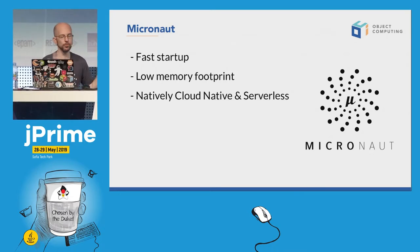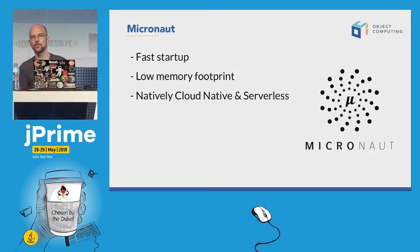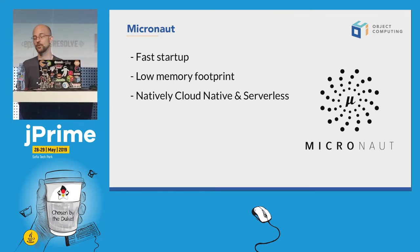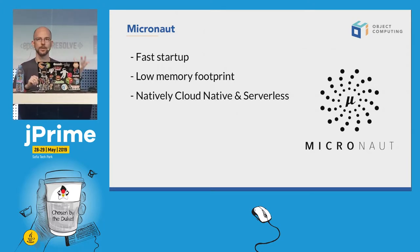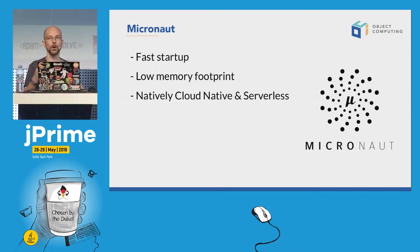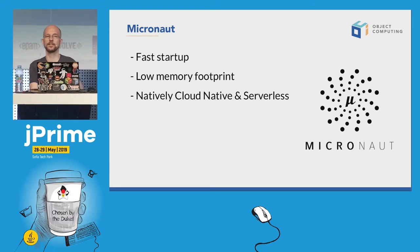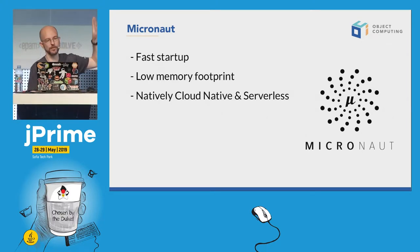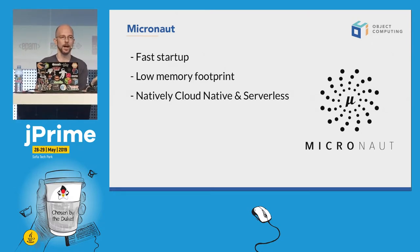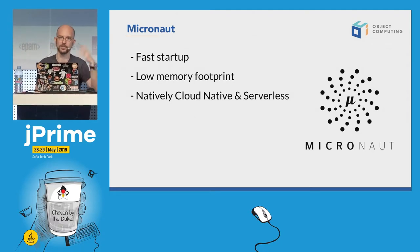We like to use the phrase 'natively cloud native,' because when you develop a framework for microservices in 2018-2019, you need to provide developers things like service discovery, distributed tracing, externalized configuration — all of that is provided by the framework, so you don't need to worry about it. It also fits really well in a serverless approach, especially because of the fast startup and low memory consumption. So if you develop on something like AWS Lambda, you don't need to pay too much because your application takes too long to start up.